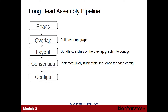Here's the long read assembly pipeline. We have reads at the beginning. We then construct what we call an overlap graph — we find pairs of reads that have similar starts and ends. We then process the graph in a layout step, where we try to find the ordering of reads through the graph that reconstructs the genome. We then call a consensus sequence to pick the most likely nucleotide for each base of our pileup, and then output those as contigs.